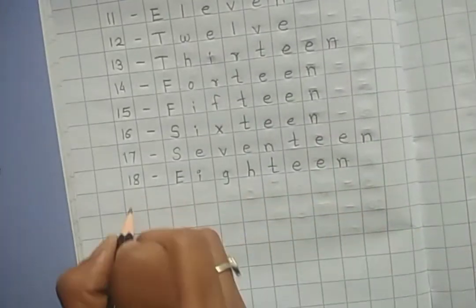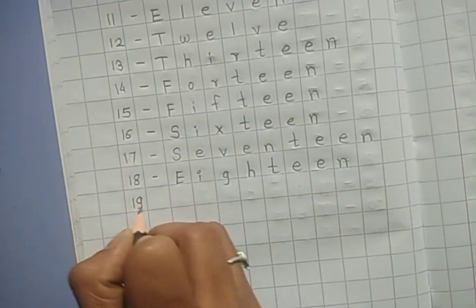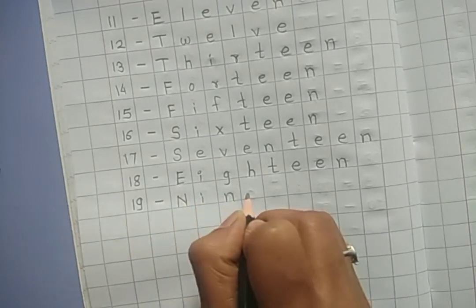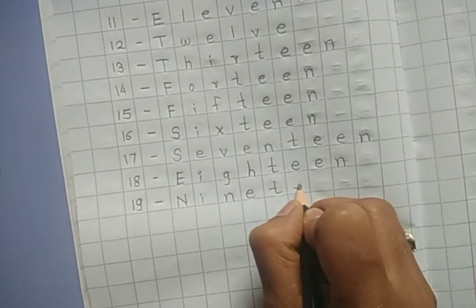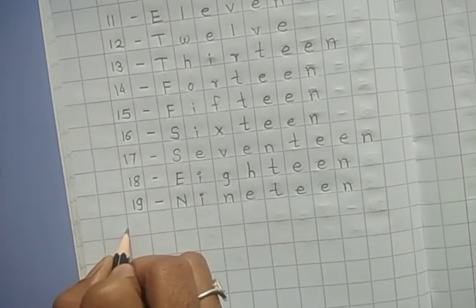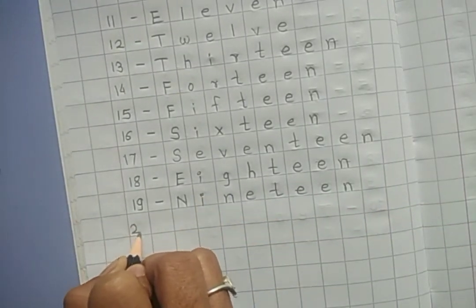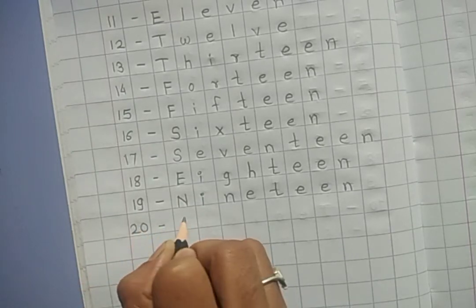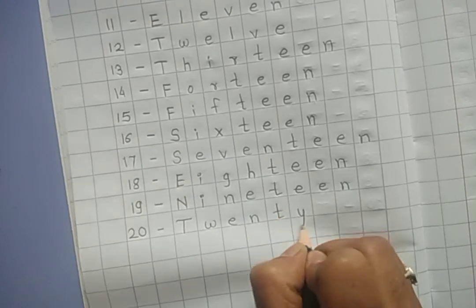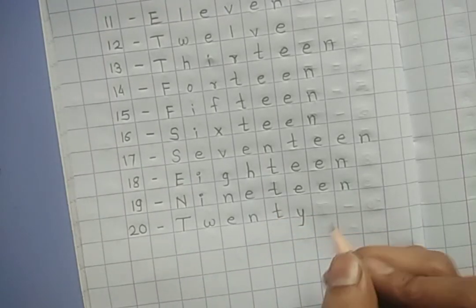Next number is 19, N-I-N-E-T-E-E-N, nineteen. And last is 20, T-W-E-N-T-Y, twenty.